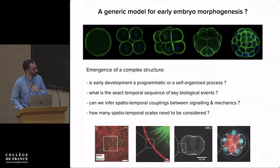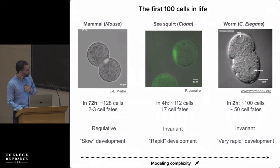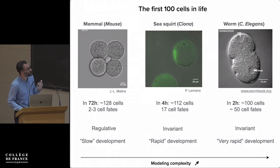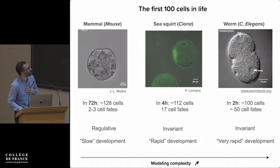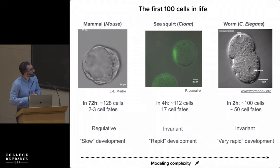Here I show three embryos from a different perspective: the first hundred cells. The first video is a mouse embryo — it takes three days to reach about a hundred cells. I like this system because at the end you have only two to three cell fates, making it relatively simple. The development of this embryo is regulative, meaning each embryo has a slightly different shape. It is very slow, so in terms of mechanics you can make a quasi-static approximation.